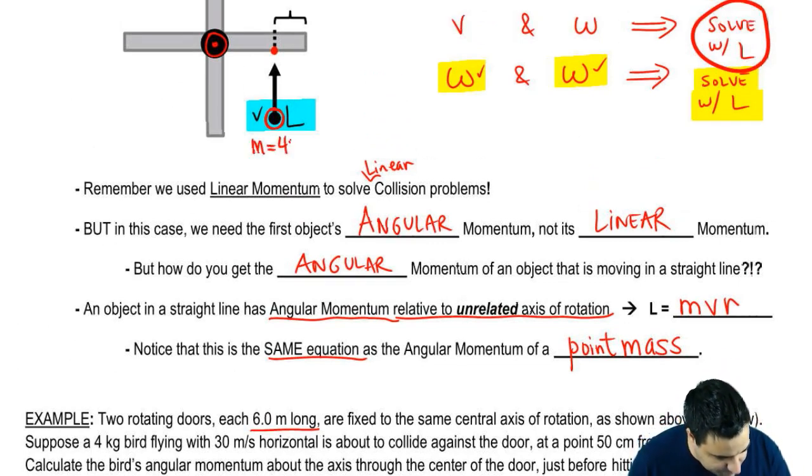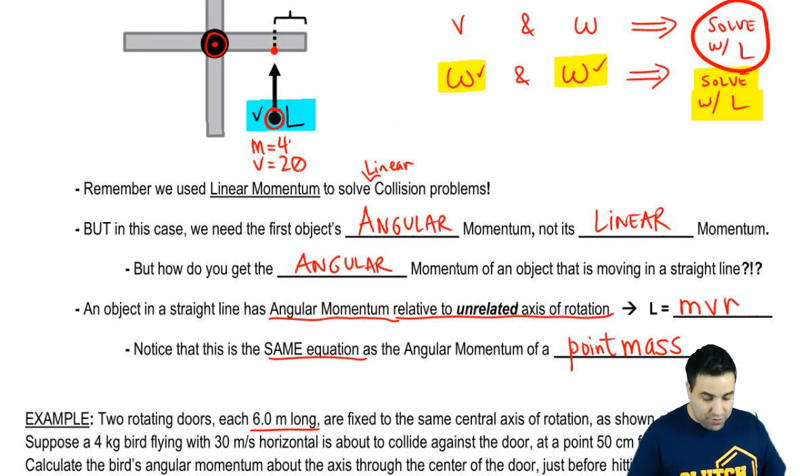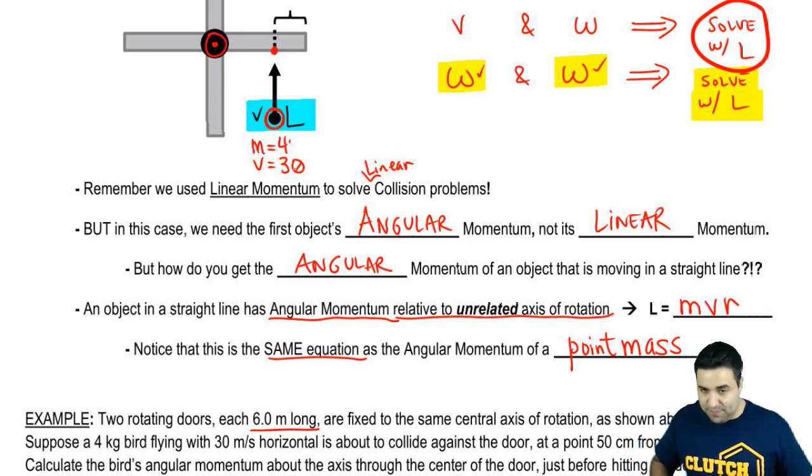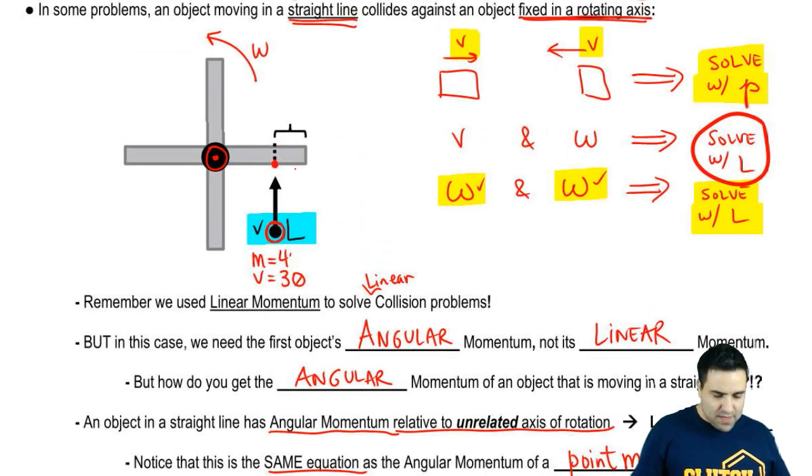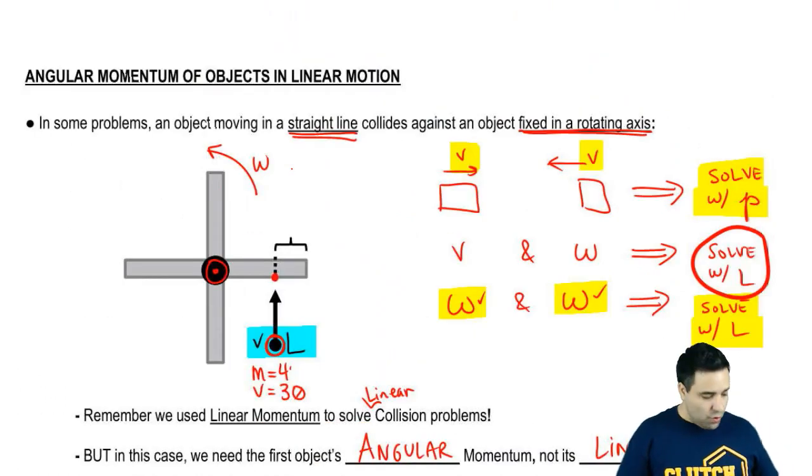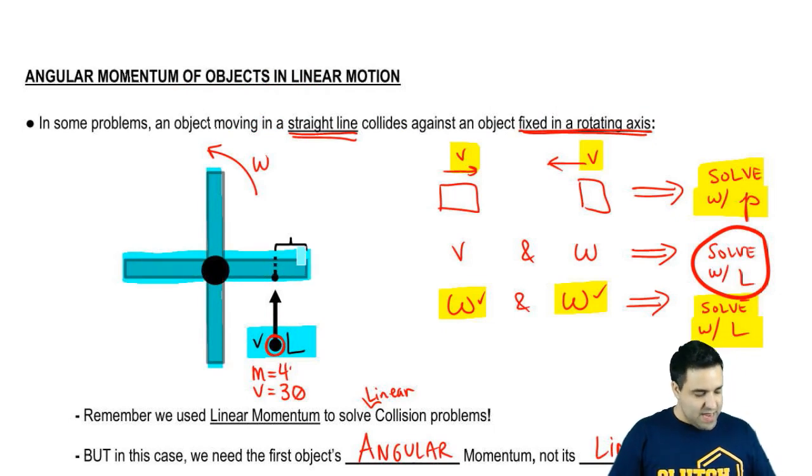The bird moves with a velocity of 30 horizontal, it's about to collide against the door. From top view, you see the bird going like this, is about to collide against the door at a point 50 centimeters from one end. It has two doors, which means we're talking about one, two, and the doors are six meters long.